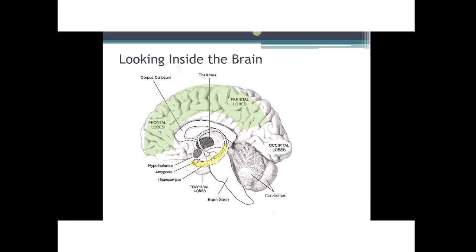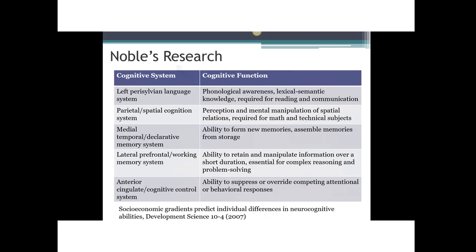Think about what it would mean for a child from a low-income family if the part of the brain that helps encode memory is less well-developed. The University of Wisconsin study also found differences in the frontal lobes — important for executive functions such as planning, impulse control, attention, and problem solving — and the parietal lobes, which play an important role in sensory integration, visual attention, and connectivity among brain regions. There is strong evidence that poverty affects the brain's physical structure and development.